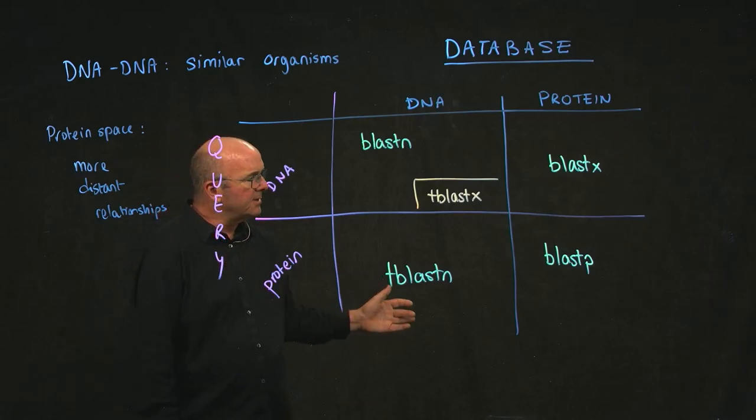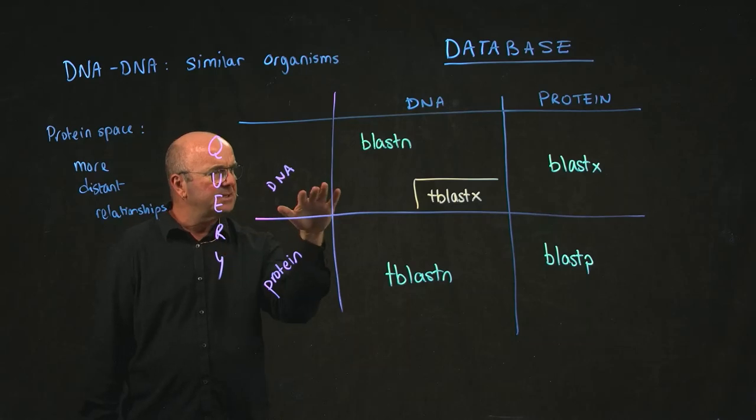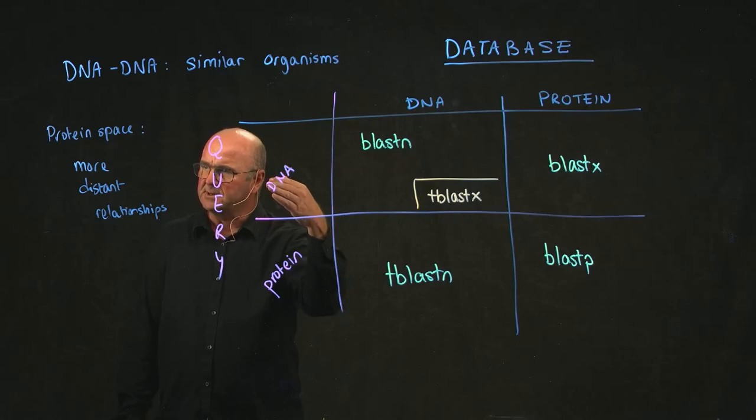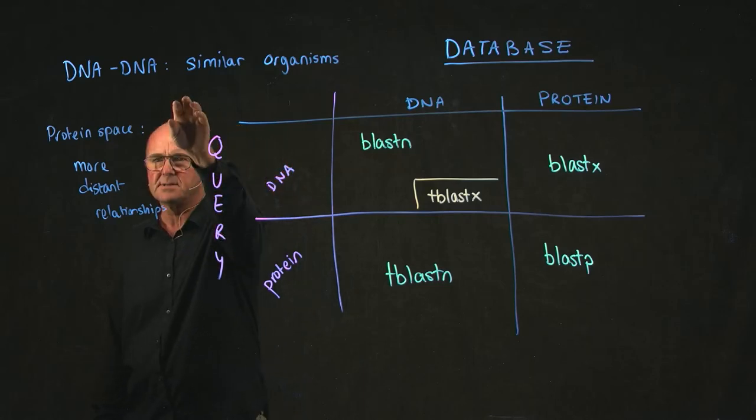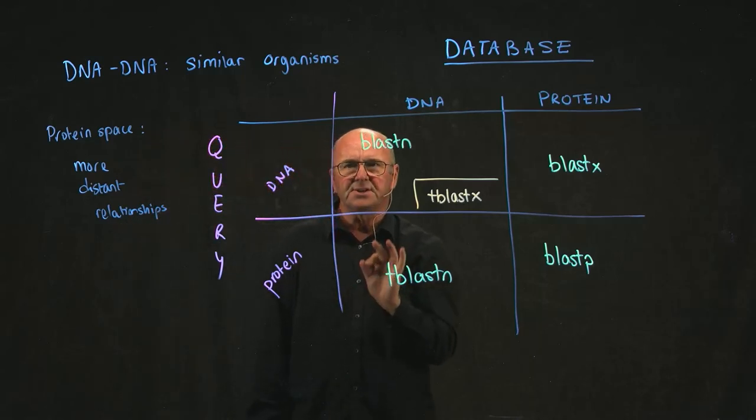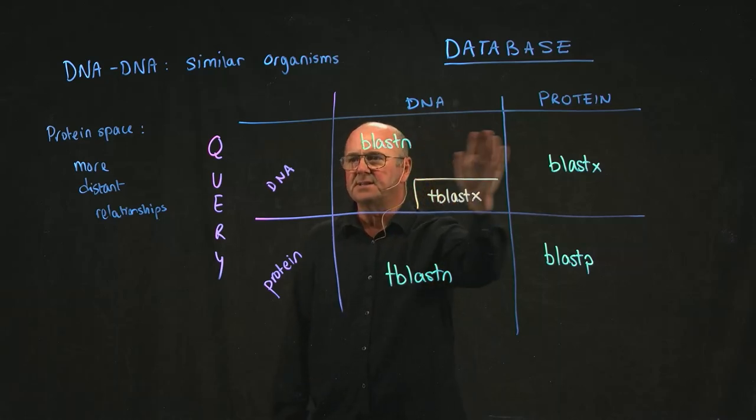Remember, we looked at an alignment and we had two DNA sequences that were very, very dissimilar, but when we translate them, they became the same protein sequence. That's because of this. So depending what you're searching for, you want to use one of these different algorithms.